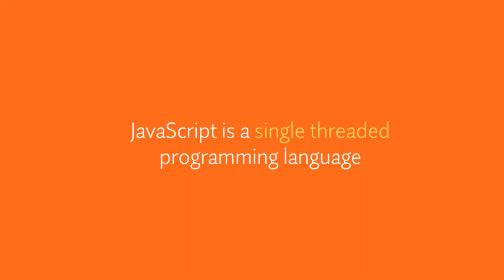So using asynchronous programming, we can perform long network requests without blocking the main thread. Now again, there are two ways through which we can do that — either using promises or observables. So let's first quickly understand the difference between a promise and an observable.